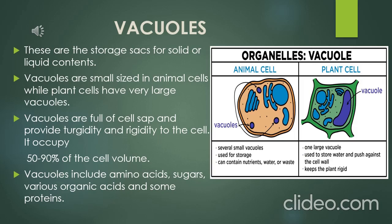Vacuoles make the cell turgid or rigid and occupy 50 to 90 percent of the cell volume. Vacuoles contain amino acids, sugars, various organic acids, and some proteins. They can contain both solid and liquid contents, and in animal cells they can be used for storage.